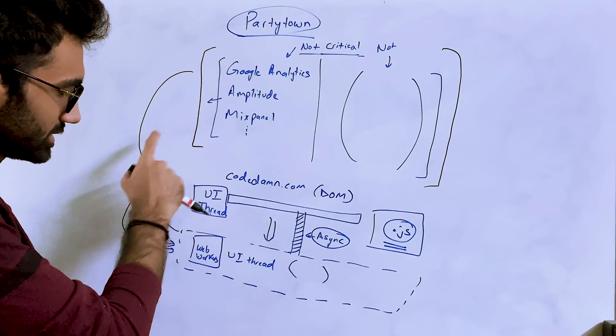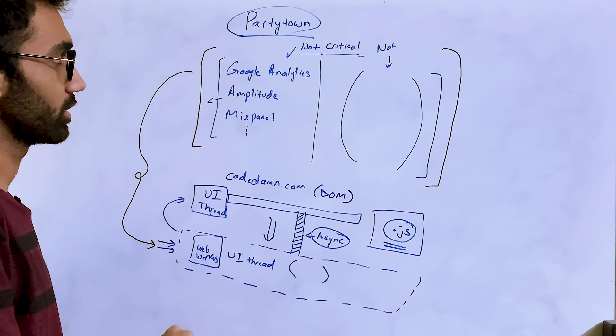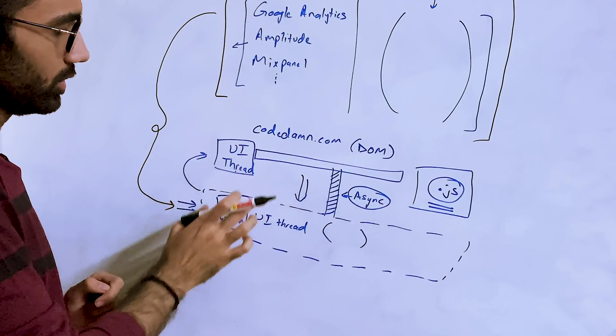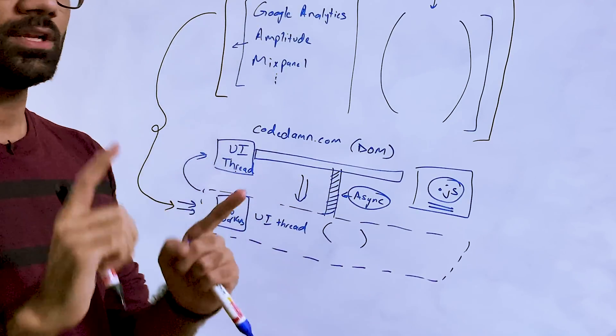Now what party town does is something really weird alongside running all these scripts on the web worker. Technically speaking there is no problem in running a script in a UI thread versus a web worker.